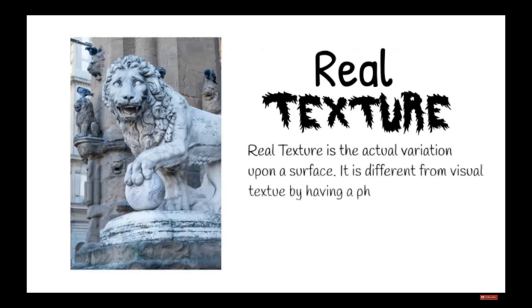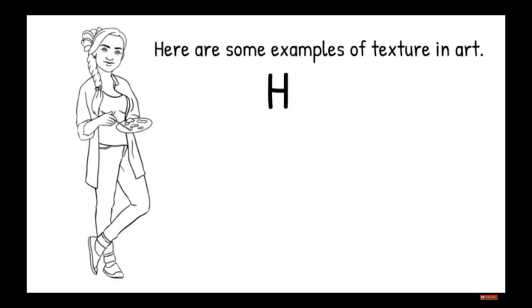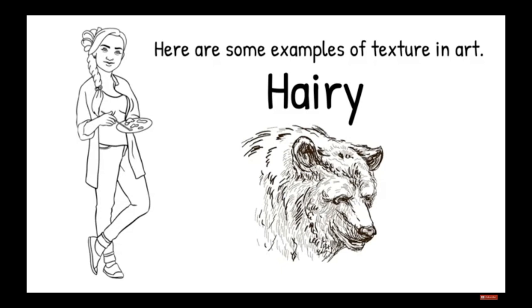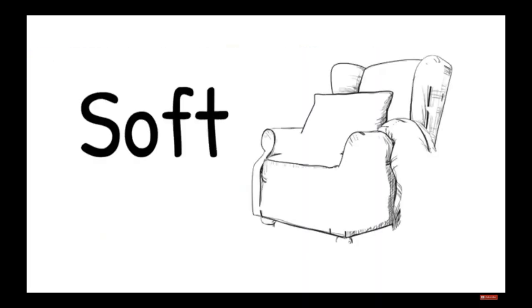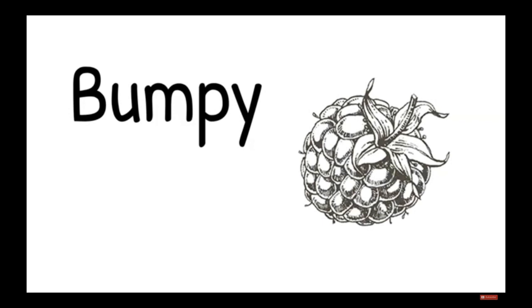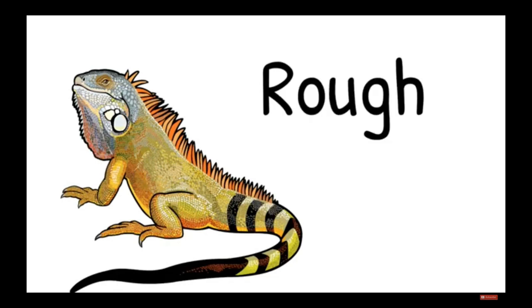Real texture is actual variation upon a surface. It is different from visual texture by having a physical quality that can be felt by touch. Here are some examples of texture in art: hairy, smooth, soft, bumpy, and rough.